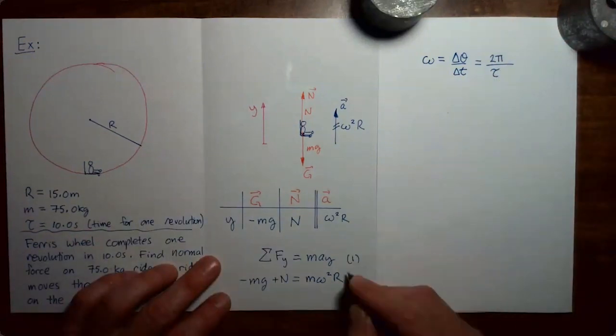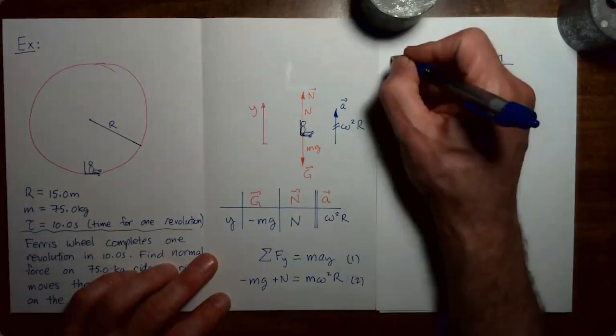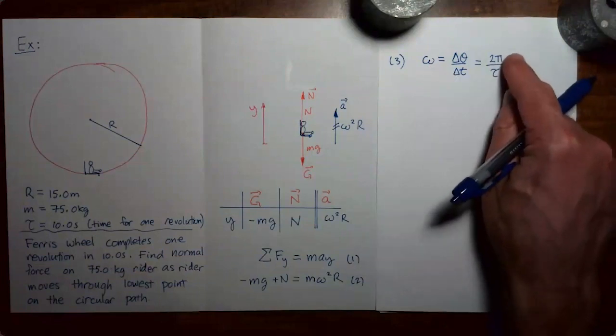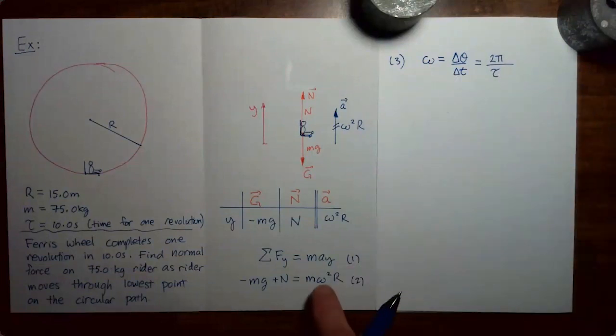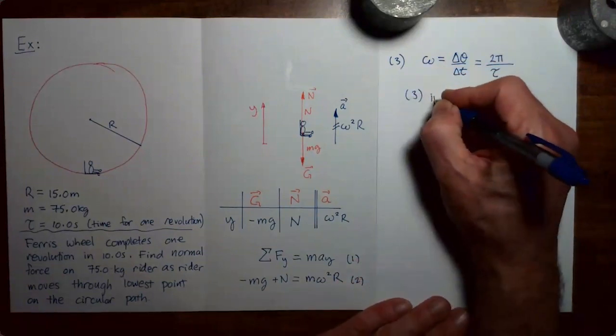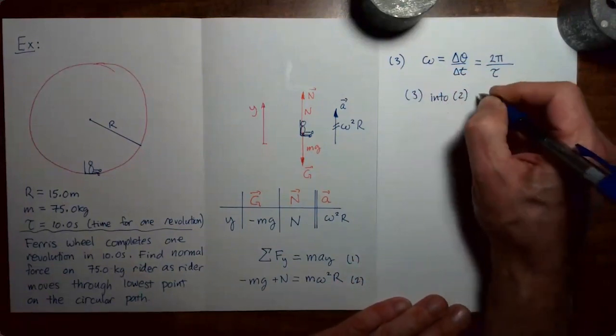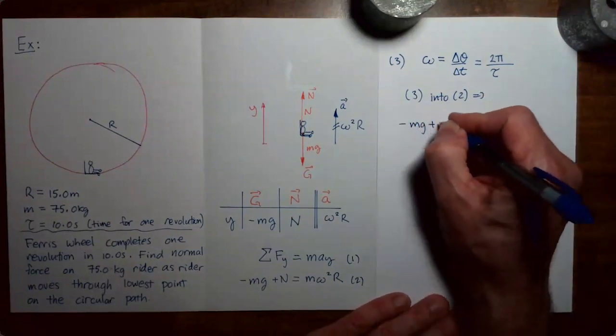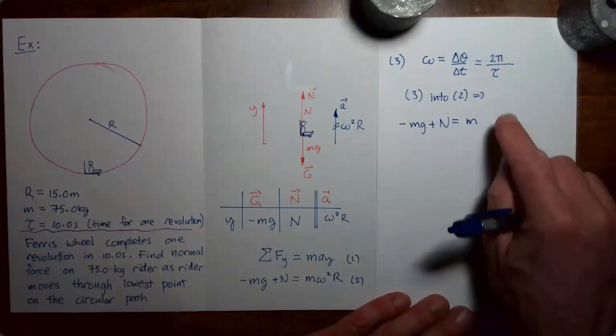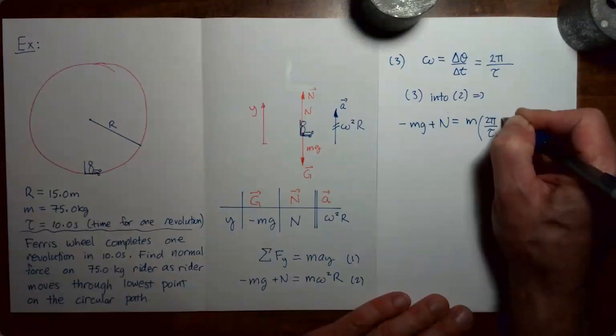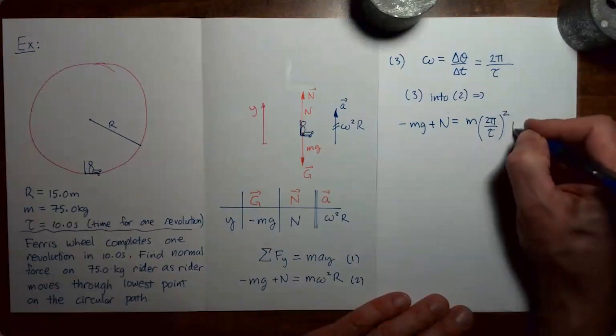I'm going to go back and number my equations. One, two, three. So now I'm going to take my expression for omega. Omega equals 2 pi over tau and put it into Newton's second law here. So I'm doing 3 into 2. That's going to give me minus mg plus n equals m. Substituting for omega, 2 pi over tau squared times r.